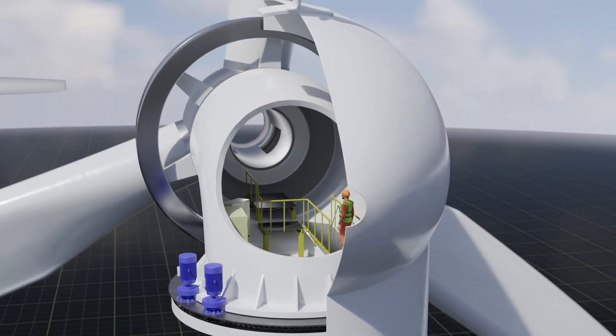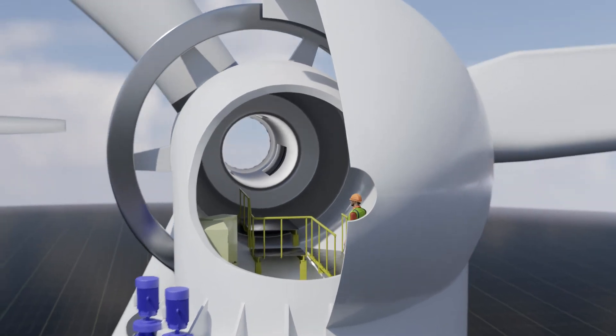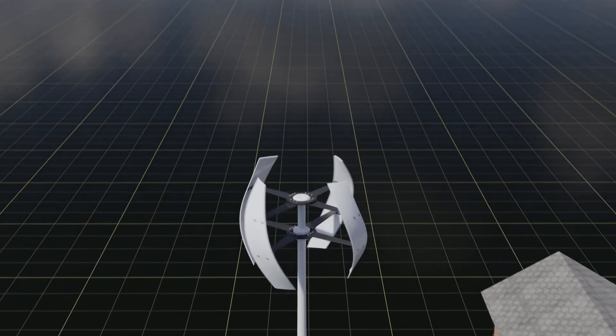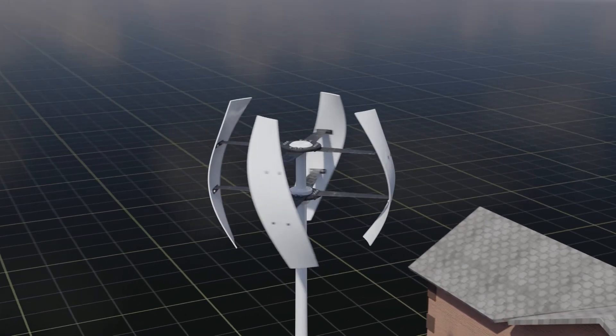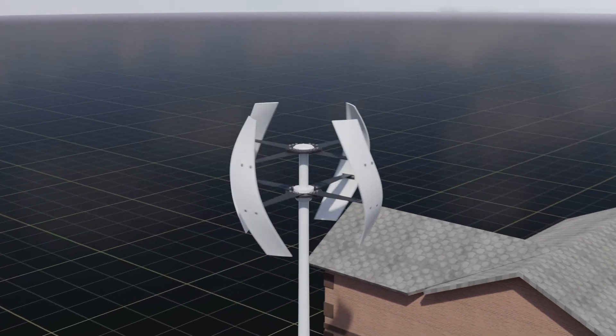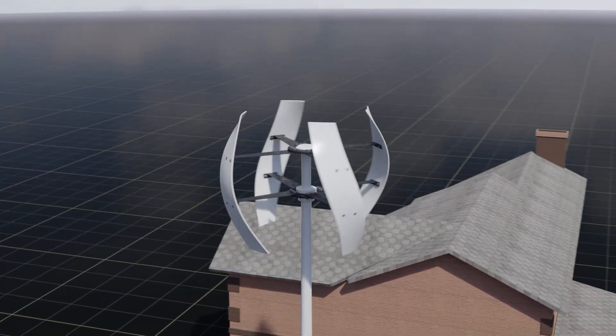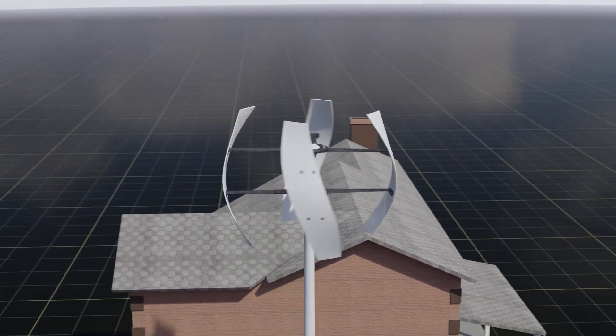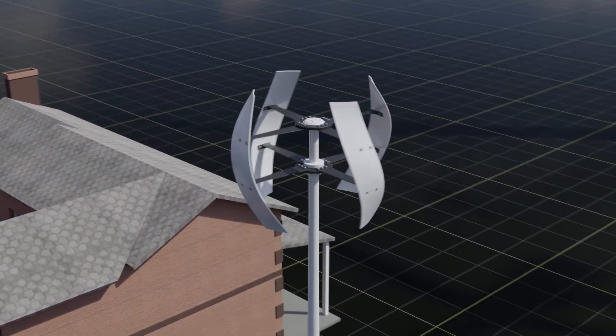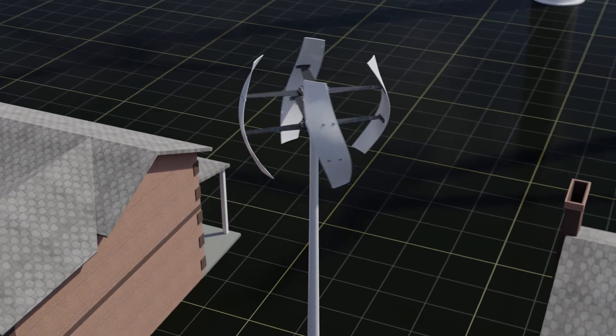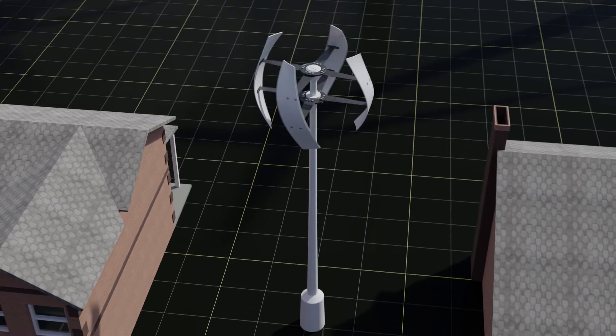There is a third type of wind generators. They are called vertical wind generators. This type of power generator is not very common because it has a low efficiency in constant strong wind, but such wind generators are often used in residential areas with a high density of buildings. In such conditions, this type of generator is more efficient than the previous two types of turbines.